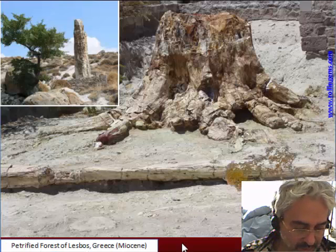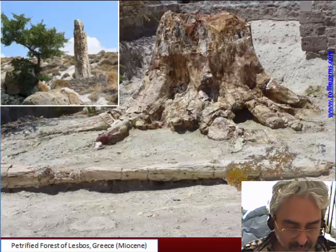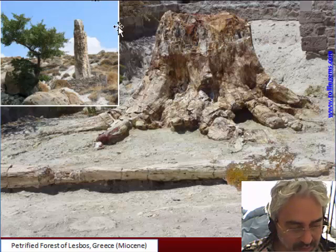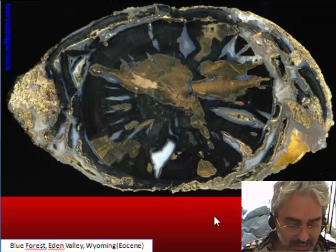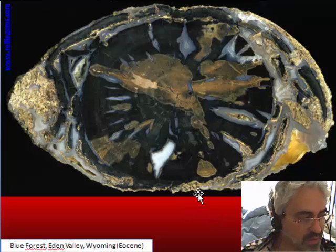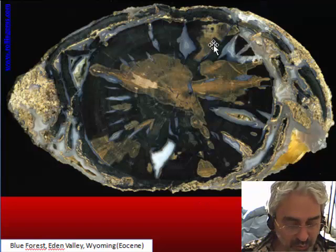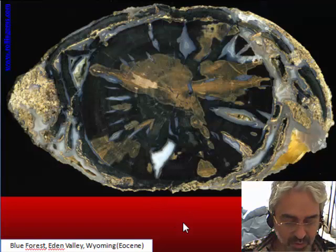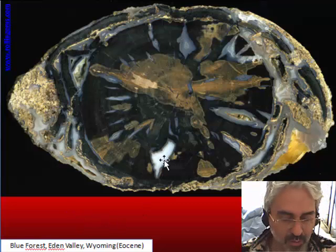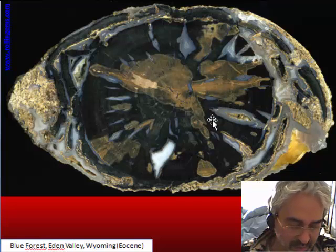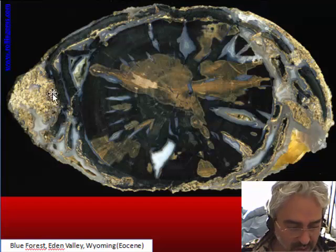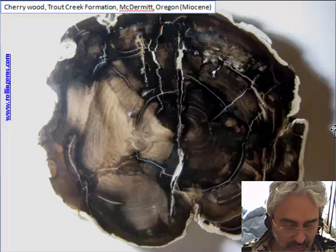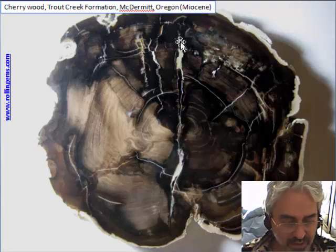Another famous deposit is the Petrified Forest of Lesbos Island in Greece — Miocene age with a different kind of tree, famous because a few trees are still in standing position. Many forests are not so spectacular as a national park but are found in geological deposits and bring a lot of material to the market. One of the more famous is the Blue Forest in Wyoming, characterized by blue inclusions of chalcedony in the fractures of the wood, with logs slightly squished to an oval shape.